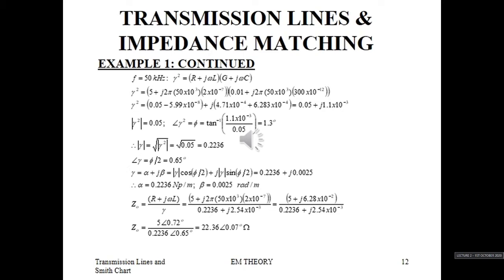Z₀ is again R + jωL over gamma, inserting the values for 50 kHz. Therefore, Z₀ equals 22.36 at an angle of 0.07 degrees. One notices that even at 50 kHz the angle is still very low, so Z₀ is still almost purely real because the imaginary part is very, very small at 50 kHz.